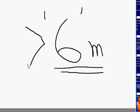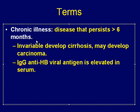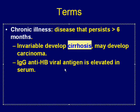Some patients with chronic hepatitis will invariably develop cirrhosis of the liver. It is important to counsel the patient that there is a chance of cirrhosis developing, and they may also develop carcinoma. This can frighten the patient, but it is important to inform them about these possible outcomes of the disease.